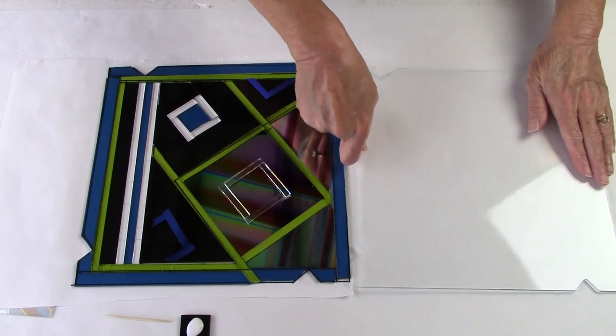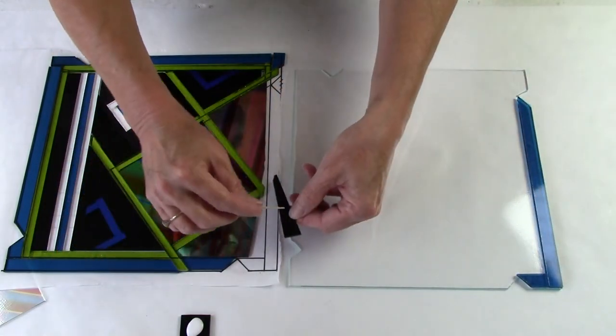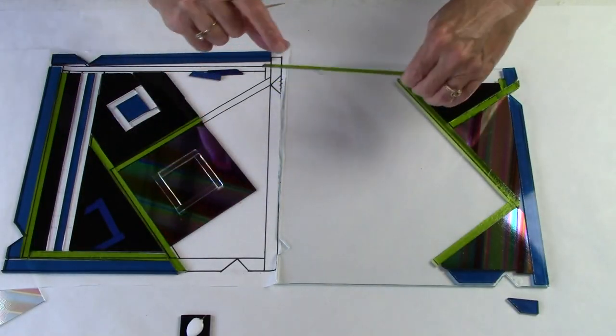Now I'm going to move my design layer over to the base layer, and I'm going to use a tiny bit of glue to glue these pieces in place so they don't shift when I transport this piece of art to the kiln.